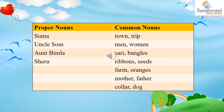'Aunt Bimla bought an orange sari for herself.' Aunt Bimla is a proper noun, but we have already written it, so we will not write it again. 'Bought an orange sari' — sari is a common noun because it is the name of a thing. So sari we will write in the common nouns column.